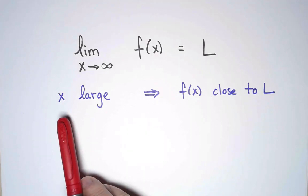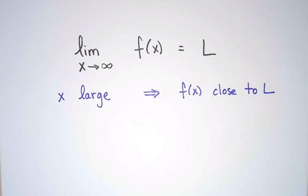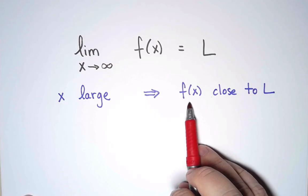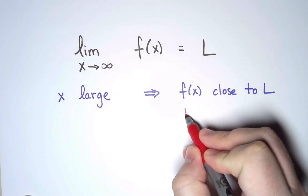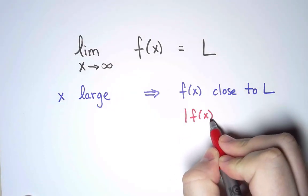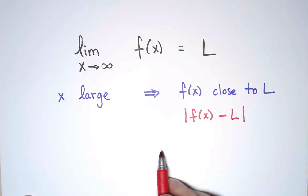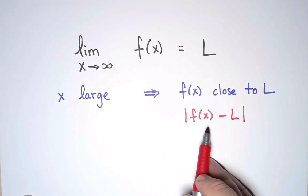I begin with the idea that if x is large, then f must be close to L. I want to transform this into something more formal. First, like before, I am going to say that f being close to L is the same as the distance between f and L is small.